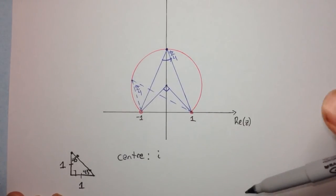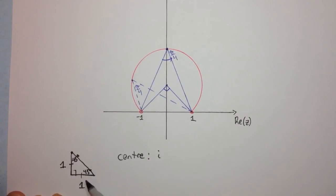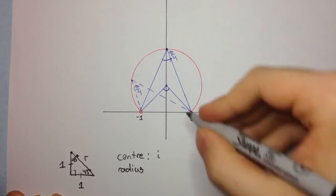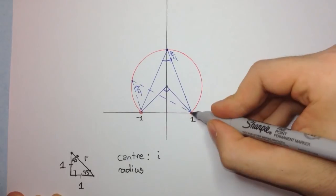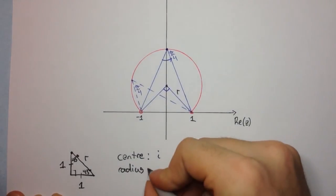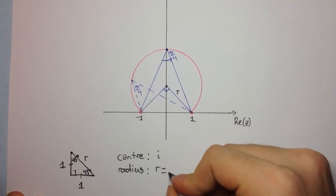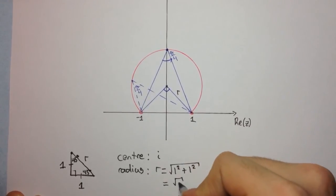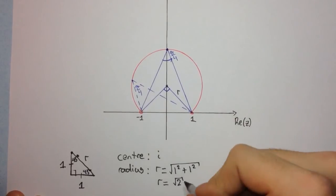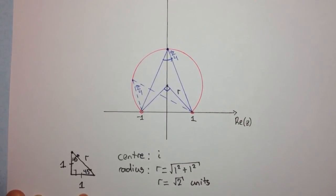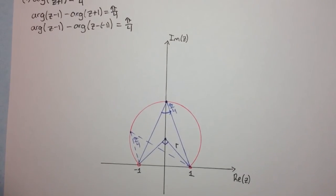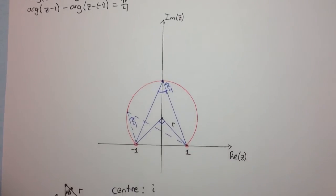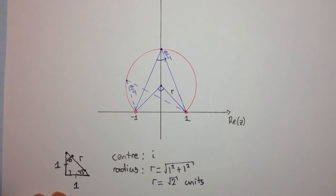How do we work out the radius? This is just simple Pythagoras theorem. The radius goes from the center to a point on the curve. Radius r is going to be the square root of the sum of the squares of the other two sides, which is root 2. So our radius is root 2 units. That's how we work out the locus for this case — it requires knowledge of circle geometry and simple triangle geometry.